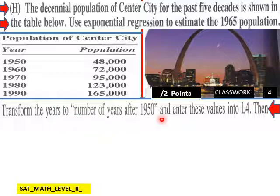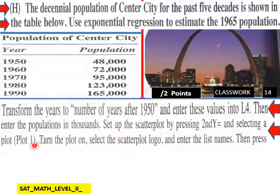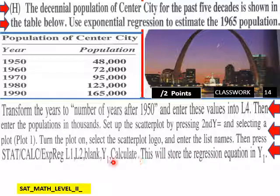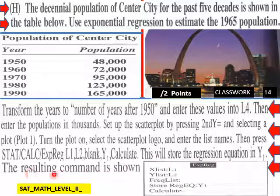Transform the years to number of years after 1950 and enter these values into L4, list 4 on your TI. Then enter the populations in thousands. Set up the scatter plot by pressing second y equals and selecting plot 1. Turn the plot on. Select the scatter plot logo and enter the list names. Then press stat calc exponential regression. List one, list two, blank y, and then calculate. This will store the regression equation in y1. The resulting command screen is right here. X list is L1, Y list is L2, frequency list blank, store regression equation y1, and then calculate. That should be a screenshot of what you should have to set up your exponential regression.